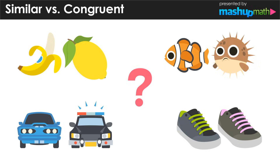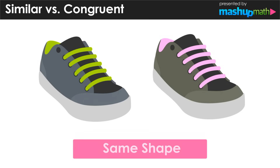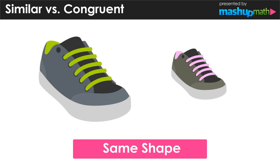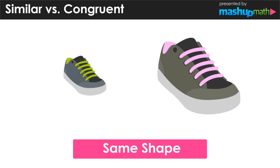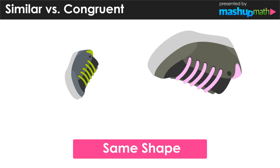Let's explore that further by looking at the pair of shoes. Notice that despite being different colors, both images have the same shape. This is still true even when we change the size by making one larger or smaller, and also when we change the orientation by rotating them in one direction or another.